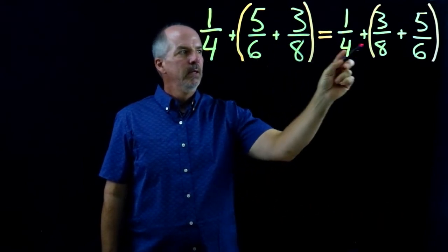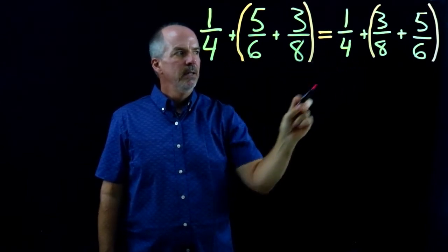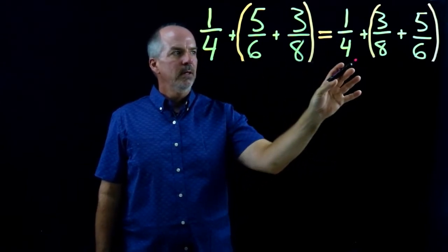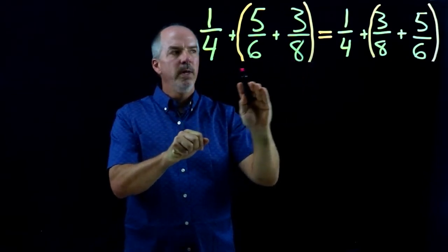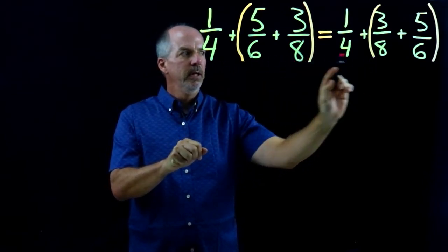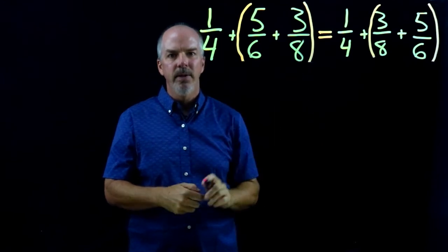We do have grouping, but our order changes. So this is the commutative property because we're changing the order in which we add. This is the commutative property for addition.